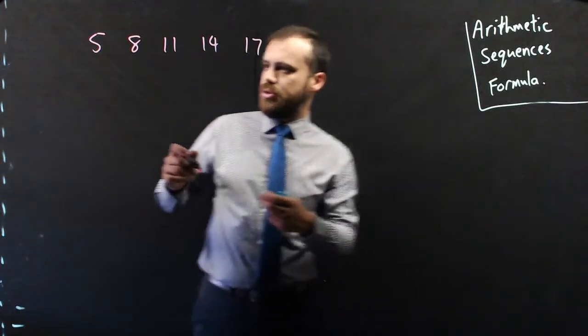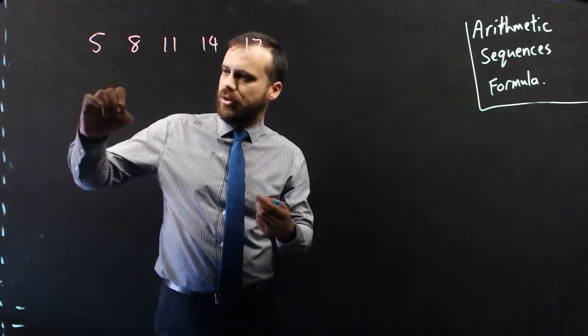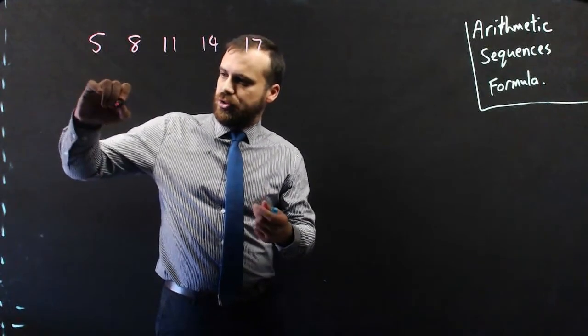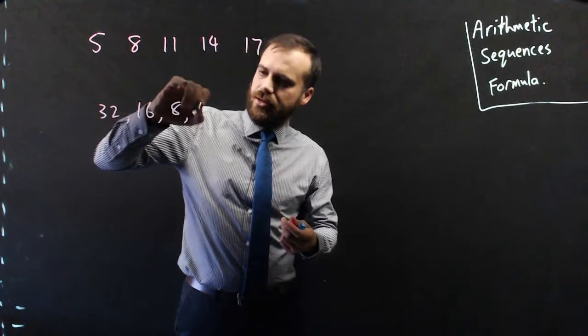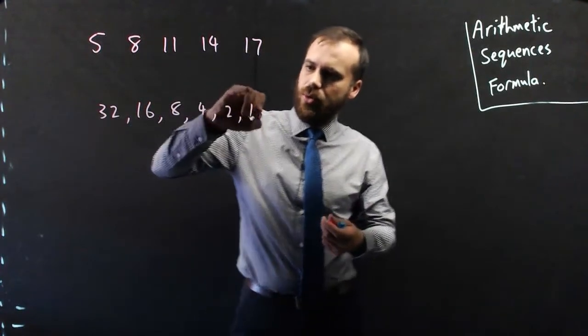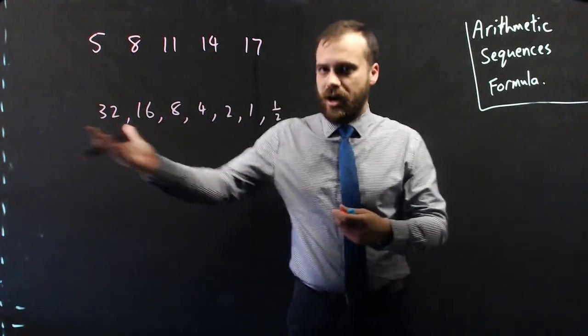The second sequence I'm going to use is something like, let's choose 32, 16, 8, 4, 2, 1, 1 half, halving each time.